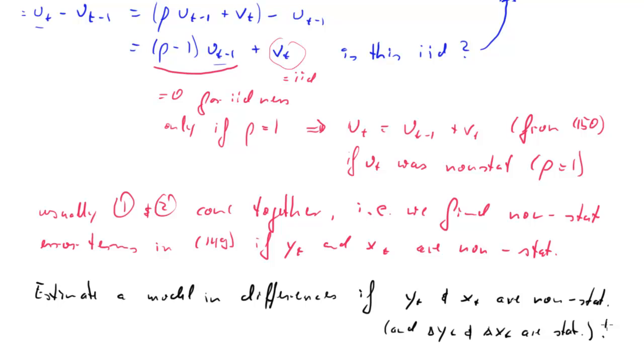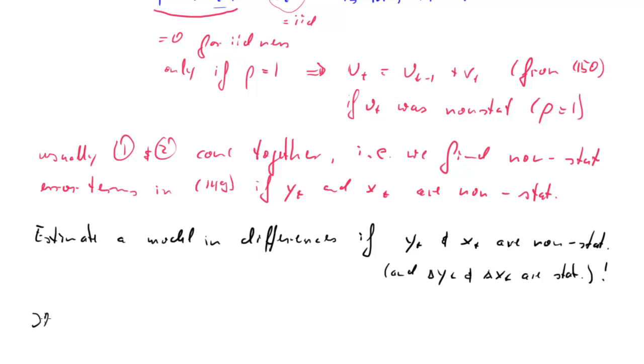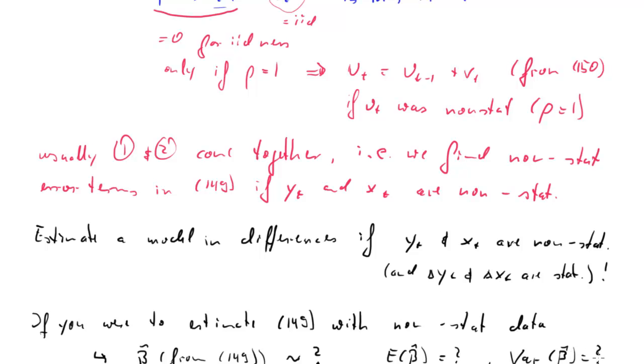If you were to estimate 149 with non-stationary data, what would be the consequence? Beta hat from equation 149, how would that be distributed? Well, the answer is we don't know. We don't even know in particular what the expected value of beta hat is and then we clearly also don't know what the variance of beta hat from 149 would be. So basically, that means an estimate beta hat is really useless because we don't know from which distribution it comes. If you do that, we call this a spurious regression model.